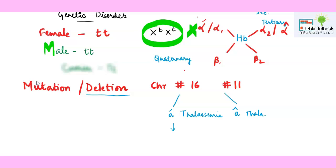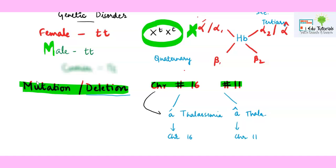When the problem arises in chromosome number 16, it is alpha-dash thalassemia; if the problem arises in chromosome number 11, it is alpha-cap thalassemia. The actual problem is that mutation or deletion happens in chromosome number 16 or chromosome number 11. In alpha-dash thalassemia, mutation or deletion specifically happens in chromosome number 16, whereas in alpha-cap thalassemia it happens in chromosome number 11.